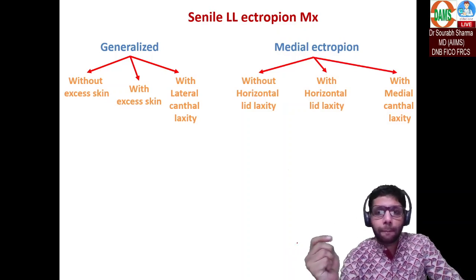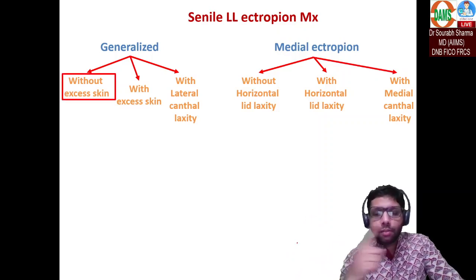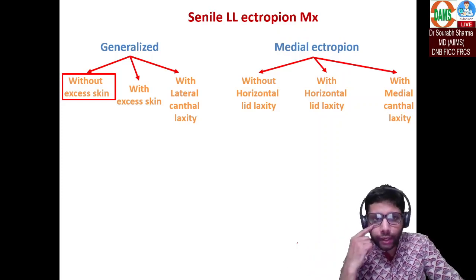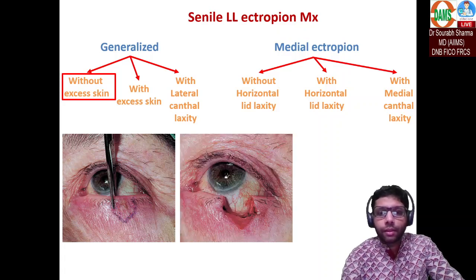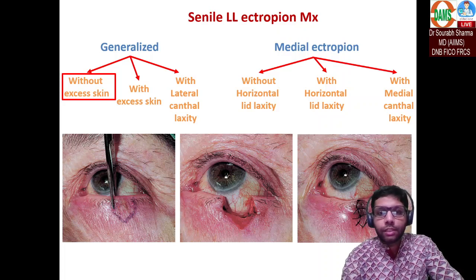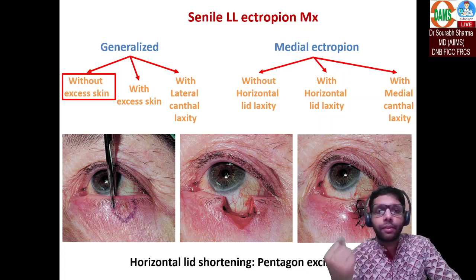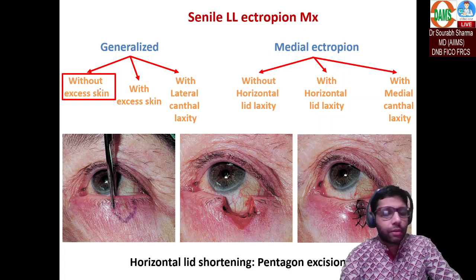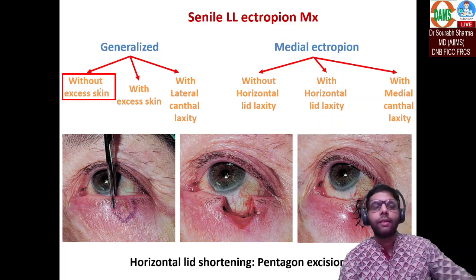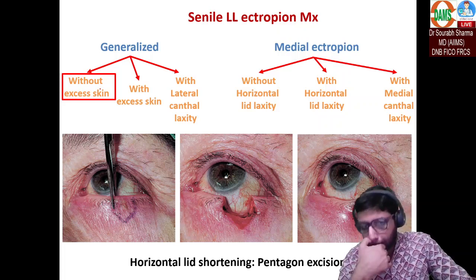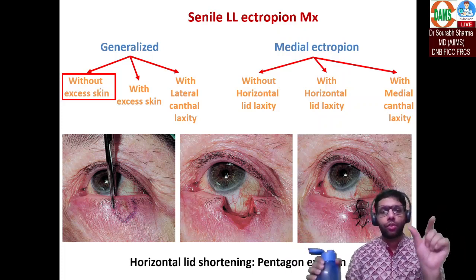For medial ectropion, assess whether there is horizontal laxity, with horizontal laxity, or medial canthal laxity. For generalized ectropion with no excess skin, a pentagon excision is done — you excise a pentagon-shaped piece and join both sides, reducing horizontal laxity. This is called pentagon excision or horizontal lid shortening.